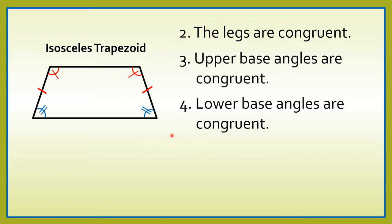Number 4, lower base angles are congruent. So, eto yung dalawang angles natin, yung lower base natin. Ibig sabihin, gagamit tayo dito ng dalawang marks. Kung dalawang marks dito, automatic dito sa kabila ay dalawang marks din. Hindi ka pwedeng gumamit ng isang mark kasi, pag gumamit ka ng isang mark dito, ibig sabihin itong angle na to at itong angle na to ay congruent. So, gamit tayo ng dalawang marks — two marks here and another two marks here, indicated that they are congruent.